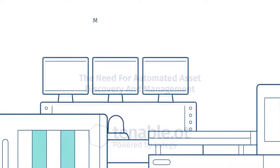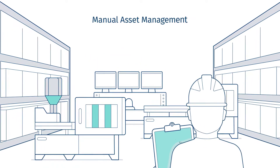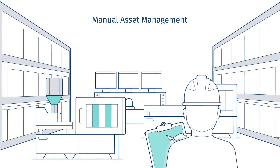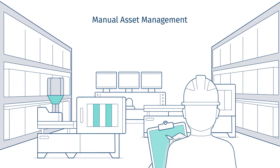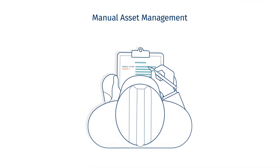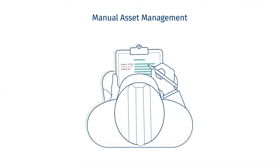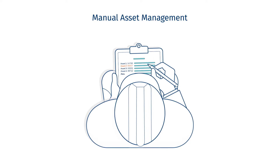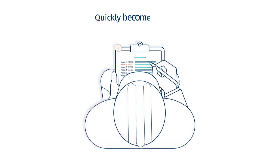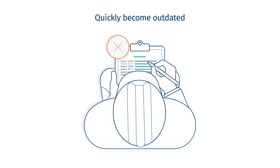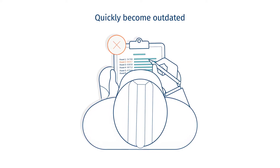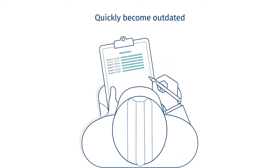Most industrial networks lack automated asset discovery and management capabilities. Instead, they rely on a patchwork of manual processes, notes, and spreadsheets. Manual processes, however, are not only labor-intensive, but also prone to errors.